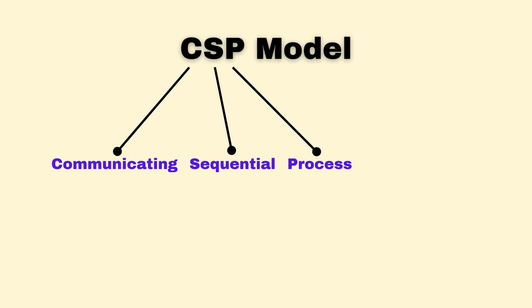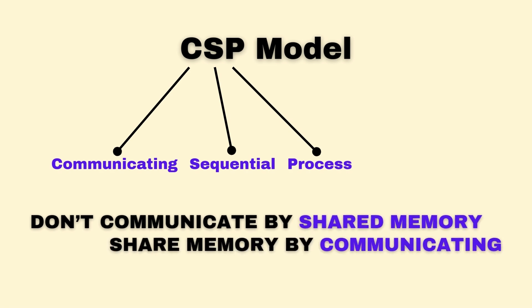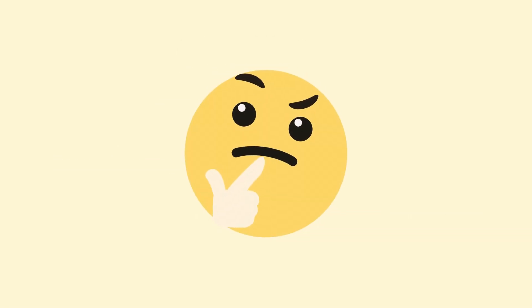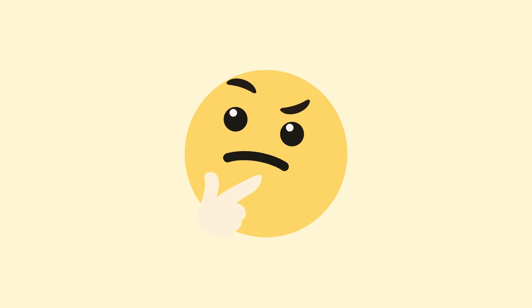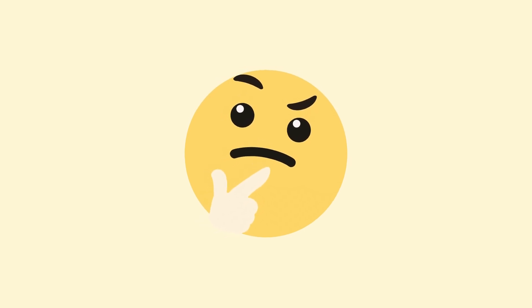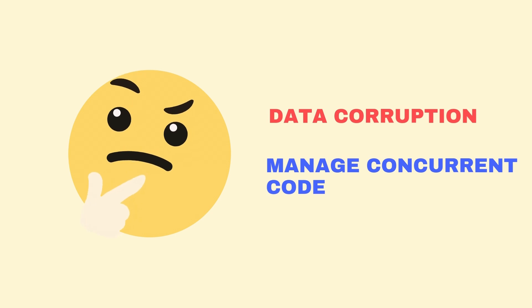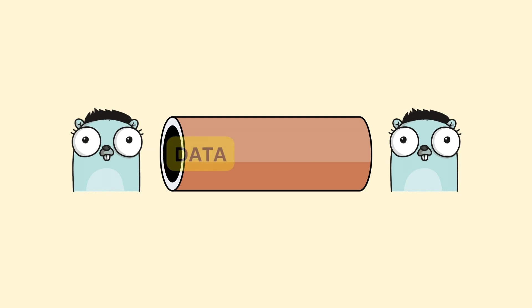Golang's concurrency is based on something called Communicating Sequential Processes, or CSP. It's a mathematical model developed in the 1970s but Go brought it into the mainstream. The core idea is revolutionary: do not communicate by shared memory — share memory by communicating. It feels unusual at first, but it actually solves issues with data corruption and makes programs easier to manage. Instead of shared memory, we have channels carrying data from one Go routine into another.